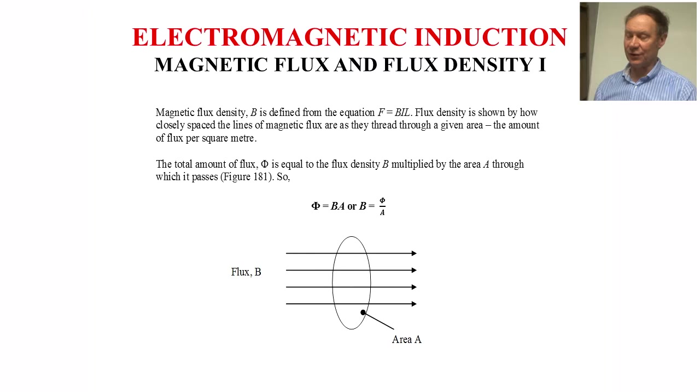So first of all, what do we mean by magnetic flux and flux density? Magnetic flux density, capital B, is defined from the equation F equals BIL, where F is the force on a current carrying conductor carrying current I, B is the field, and L is the length of conductor in the field. Flux density is shown by closely spaced lines of magnetic flux as they thread through a given area, the amount of flux per square meter.